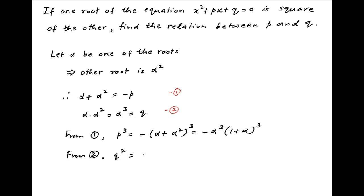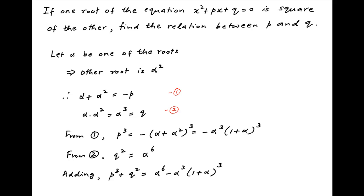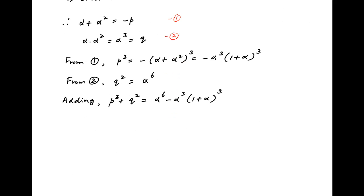Taking the square of equation 2, we get q squared equals alpha raised to the power 6. Adding the above two equations, we get p cubed plus q squared equals alpha raised to the power 6 minus alpha cubed times (1 plus alpha) cubed.